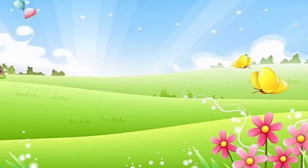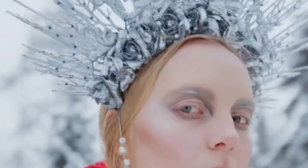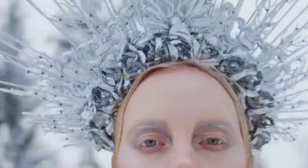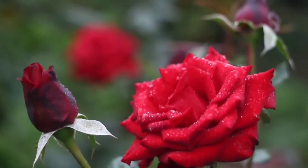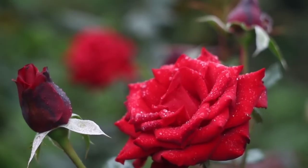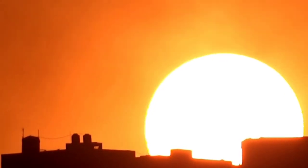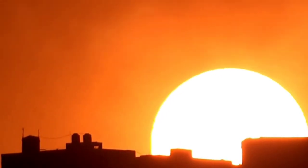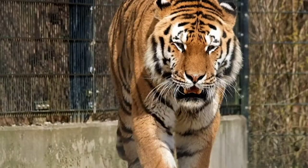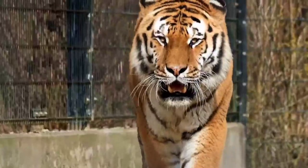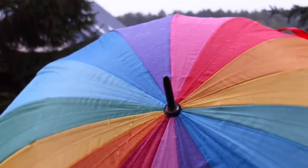Q for queen, R for rose, S for sun, T for tiger, U for umbrella.